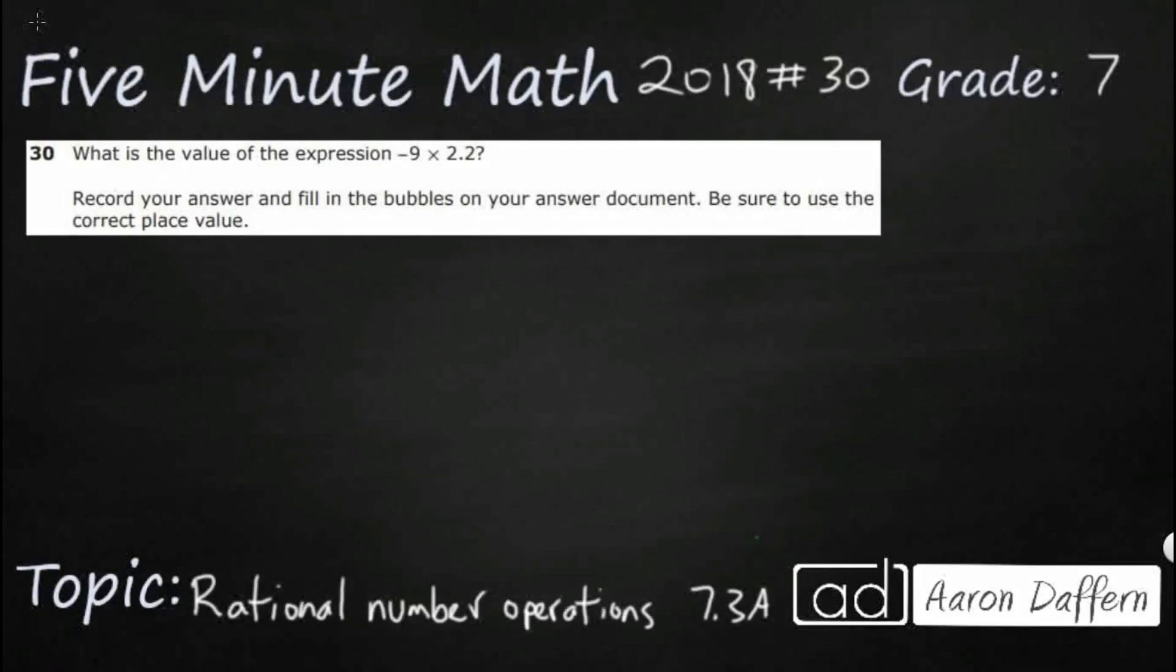Hello and welcome to 5-Minute Math. Today we are looking at the 7th grade concept of rational number operations. This is standard 7.3a in the great state of Texas and we are using item number 30 off the 2018 released STAAR test.